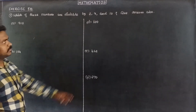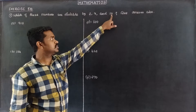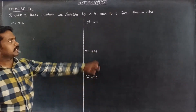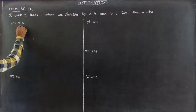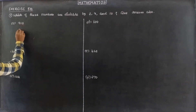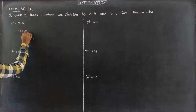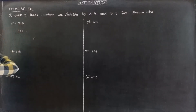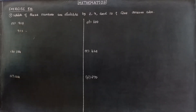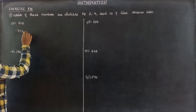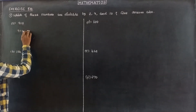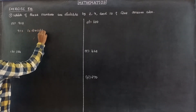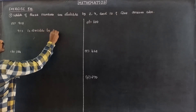For divisibility by 10, the last digit must be 0. The last digit of 918 is 8, not 0, so it is not divisible by 10. Therefore, 918 is divisible by 2 and 9 only.